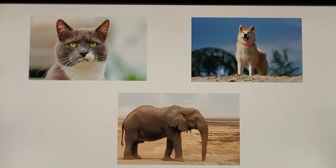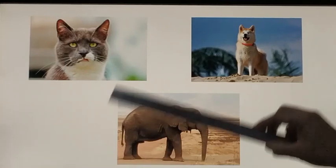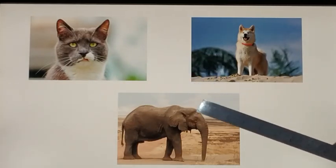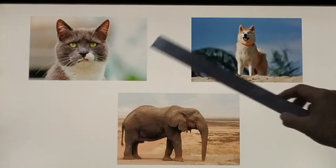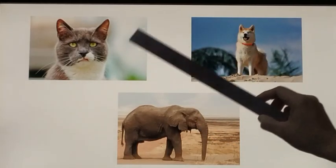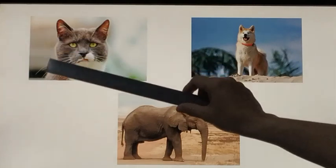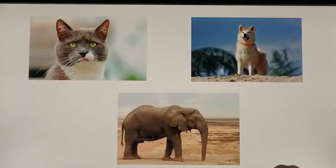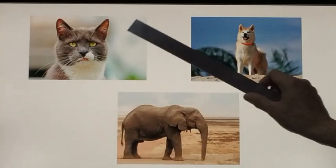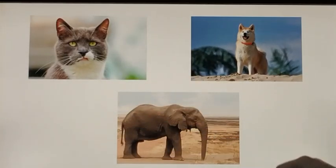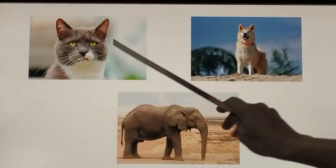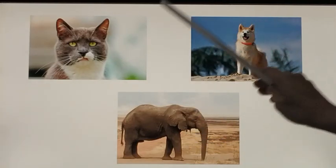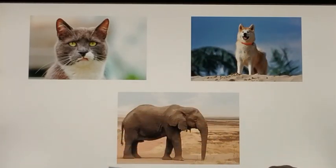For example, when you are writing a paragraph about a cat, you should not write anything about the elephant or the dog. You just have to talk about the cat. That is called being related to one topic. You are not going to shift from cat to dog to elephant — you are just going to talk about the cat.